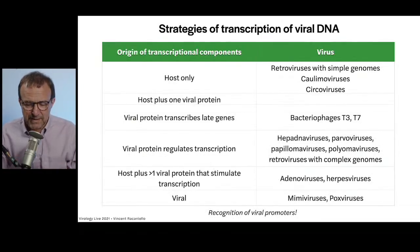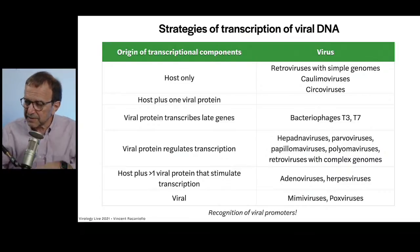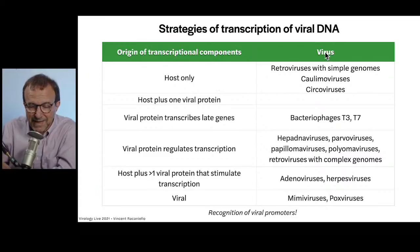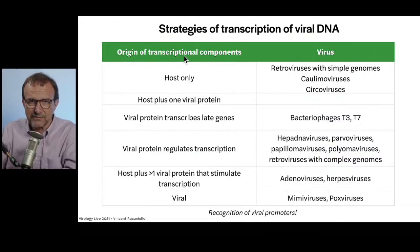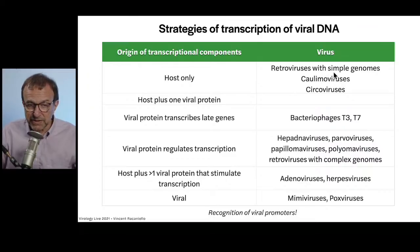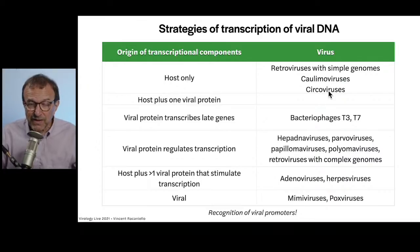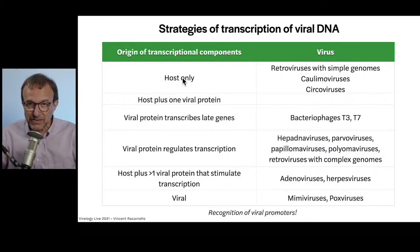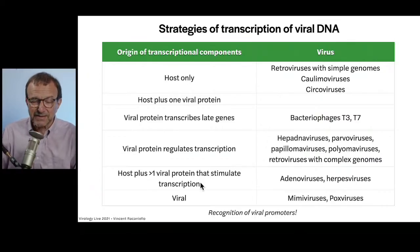Here's a nice summary of the different strategies for transcription of viral DNA. We have two columns — on the right is the virus example, and on the left is the origin of the transcriptional components. For some viruses — retroviruses with simple genomes, caulimoviruses (plant viruses with reverse transcripts), and circoviruses (single-stranded DNA viruses) — it all comes from the host. The viral genome makes zero contribution to the transcriptional machinery.